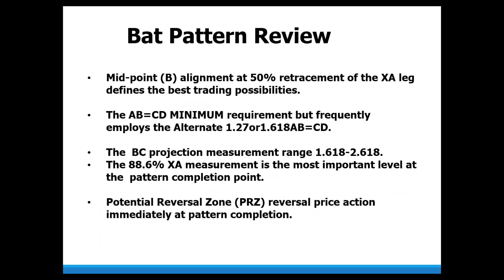Let's take a look at the BAT pattern. Most people know about the 50% retracement required that defines the regular version. This also uses an ABCD minimum, but we look for the alternate calculation in most structures. The regular BAT pattern can have a 1.618 or as much as a 2.618 BC projection, but all of this is focused on the 886 XA measurement.